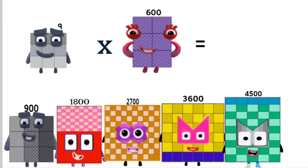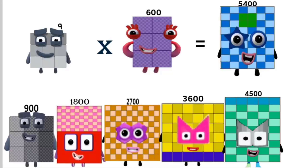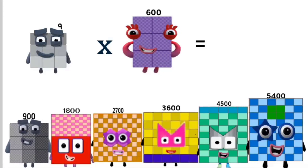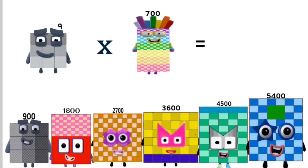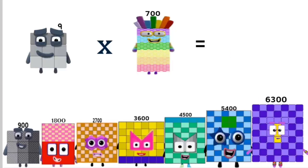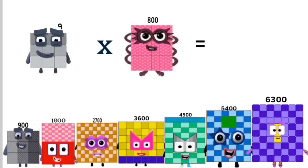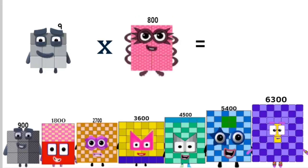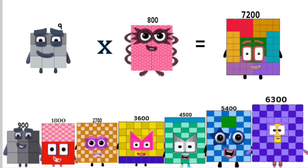Times 600 equals 5,400. Times 700 equals 6,300. Times 800 equals 7,200.